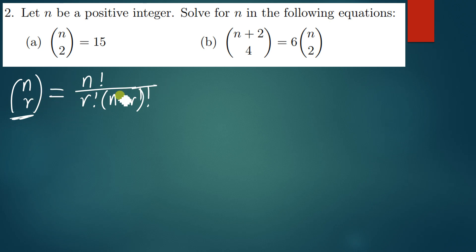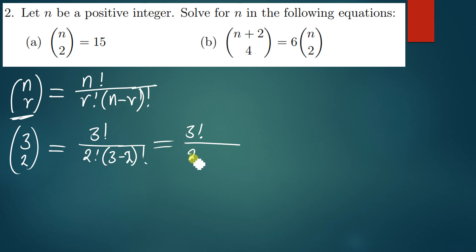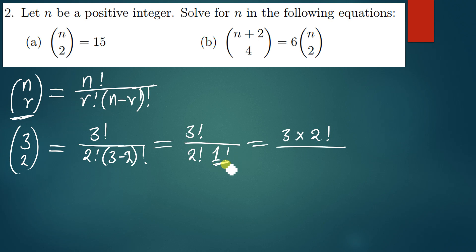Apart from that, if for instance you've been given 3 choose 2, that is going to be equal to 3 factorial over 2 factorial times open brackets 3 minus 2 factorial. This simplifies to 3 factorial over 2 factorial times 1 factorial, which is 3 times 2 factorial over 2 factorial times 1. That 2 factorial and that 2 factorial cancel, so the final answer will just be 3.